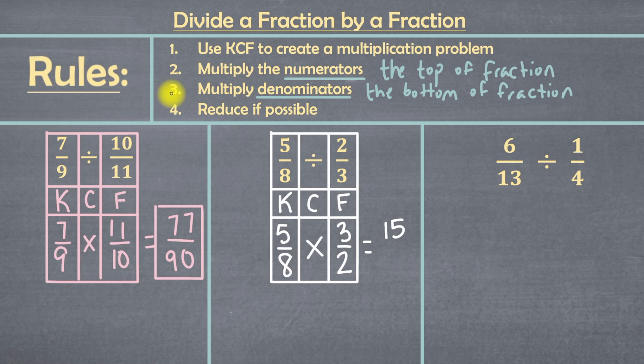Next, we'll go to rule 3, which is to multiply the denominators. And in these fractions, our denominators are 8 and 2. And when we do multiply 8 times 2, we get 16. So this will be 15 over 16. And then we'll go to step 4, which is to reduce if possible. But in this case, it's not. So we're done. And that means our final answer is 15 over 16.